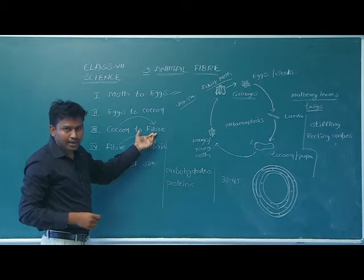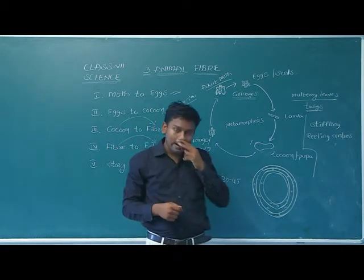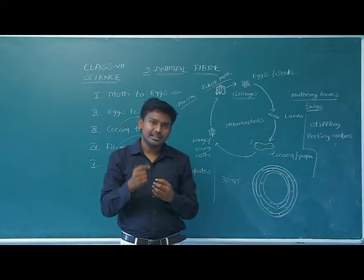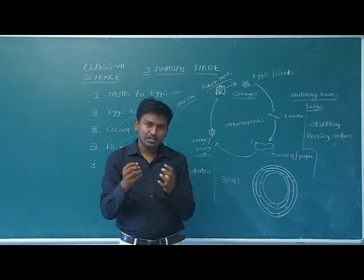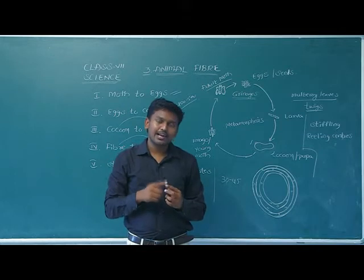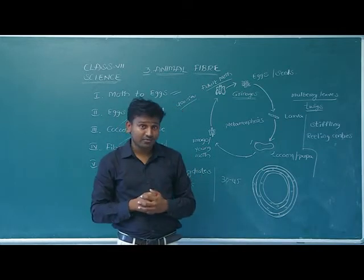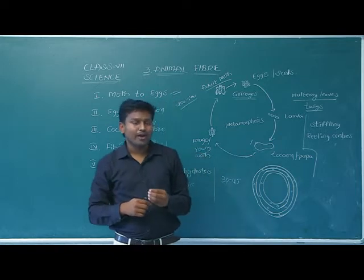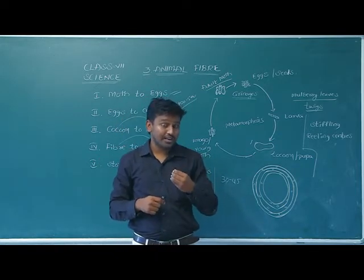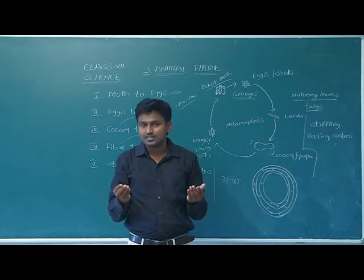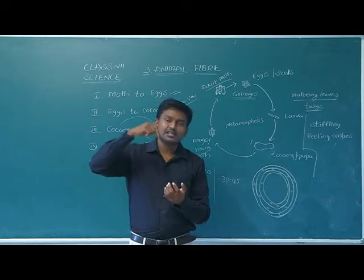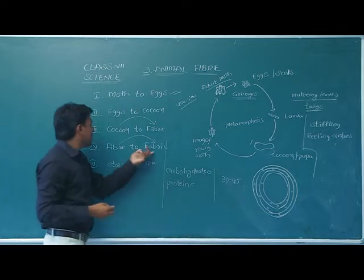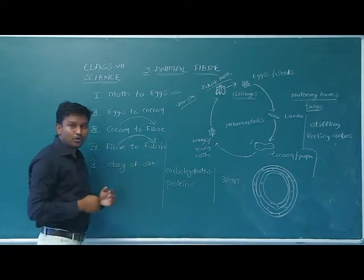After getting the fiber from the cocoon, it should be cleaned because dust or other materials may be attached to it. It is then bleached to get a white color. After that, a dyeing process is used — because silk fabrics are available in different designs and varieties of colors, colors are added to the fiber through dyeing. After dyeing, the fiber is converted into fabric.